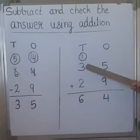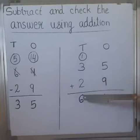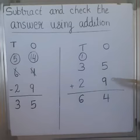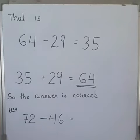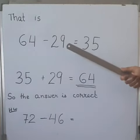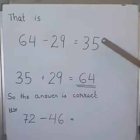1 plus 3 plus 2, we get 6. So after adding 35 and 29, the answer is 64. This confirms that 64 minus 29 equals 35.